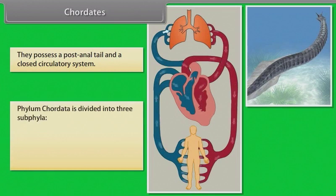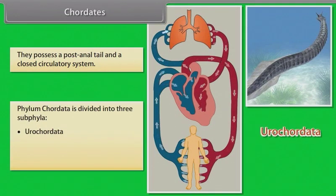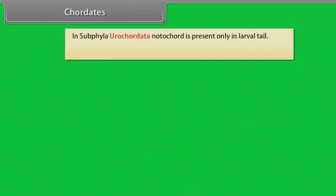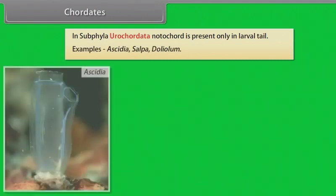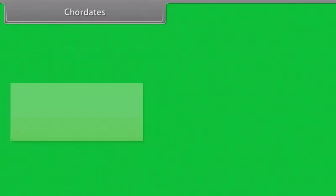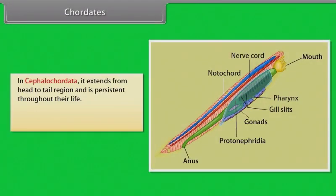Phylum Chordata is divided into three subphyla: Urochordata, Cephalochordata and Vertebrata. In subphyla Urochordata, notochord is present only in the larval tail. Examples: Ascidia, Salpa, Doliolum. In Cephalochordata, notochord extends from head to tail region and is persistent throughout their life.